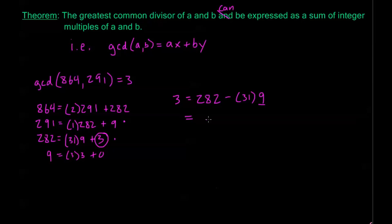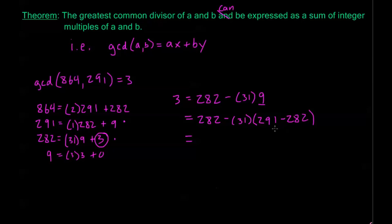So I can make that substitution. I have 282 minus 31 times 9, but 9 we found to be equal to 291 minus 282. I'm going to simplify before the next substitution by combining my 282s. Negative 31 times negative 282 is positive 31 times 282, giving us 32 times 282 minus 31 times 291.